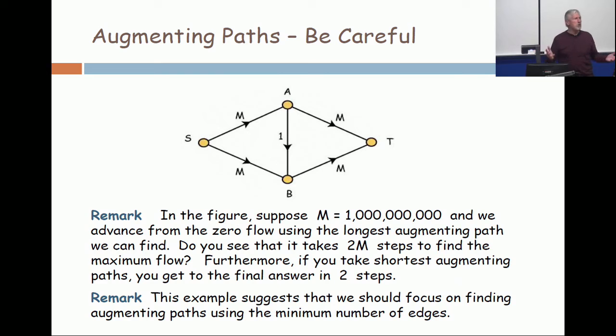But even a UGA student could solve this problem. They would just look at it and say the optimum is two billion. Put one billion over the top and one billion under the bottom. Don't use that little rinky-dink pipeline in the middle at all.